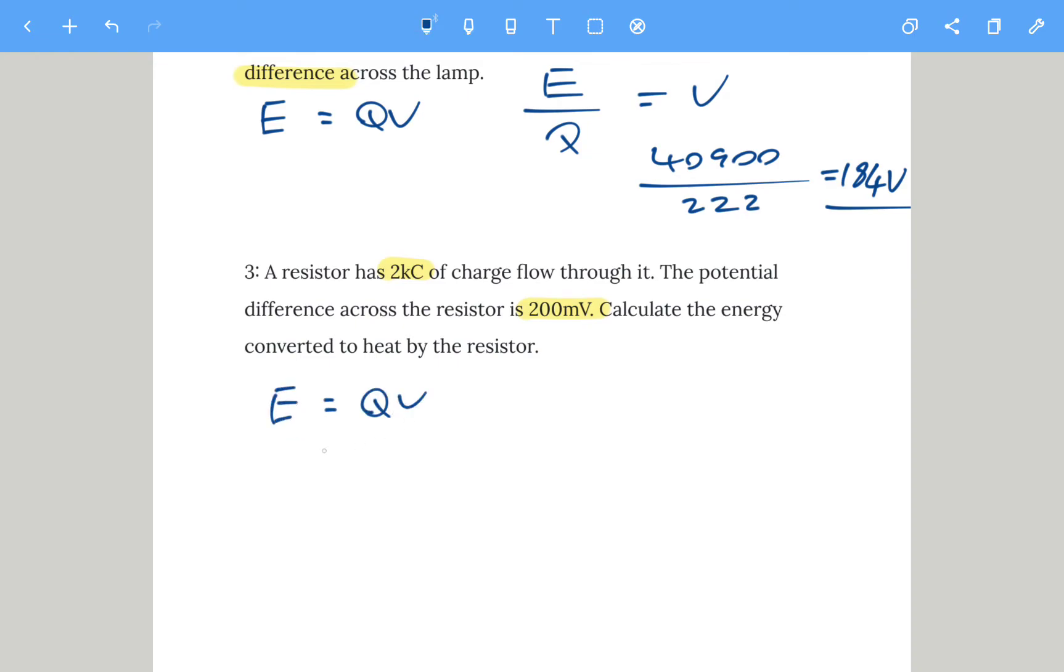In this one, energy is charge times voltage. As long as we get the conversions correct it should be okay. 2 kilocoulombs means 2,000 coulombs. Milli means divide by 1,000, so 200 millivolts is 0.2 volts. 2,000 times 0.2 gives us 400 joules of energy.